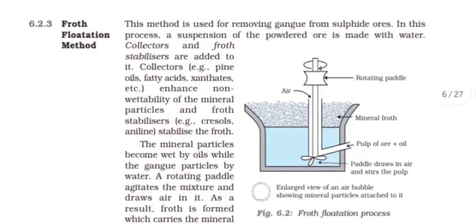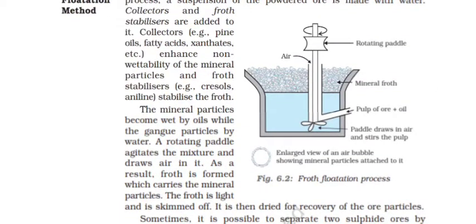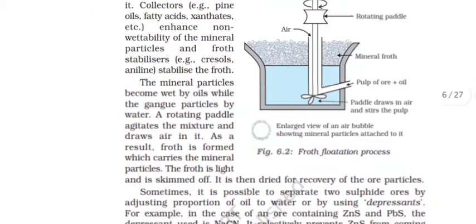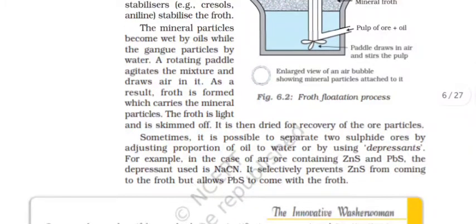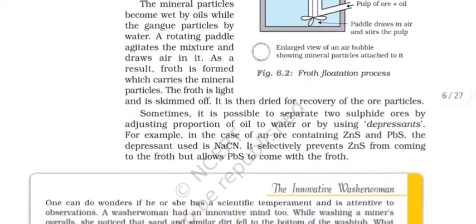Froth flotation method. The method of removing gangue from sulfide ores. In this process, a suspension of the powdered ore is made with water. Collectors and froth stabilizers are added to it. Collectors enhance non-wettability of the mineral particles, and froth stabilizers stabilize the froth. The mineral particles become wet by oils, while the gangue particles by water. A rotating paddle agitates the mixture and draws air in it. As a result, froth is formed, which carries the mineral particles. The froth is light and skimmed off. It is then dried for recovery of the ore particles.